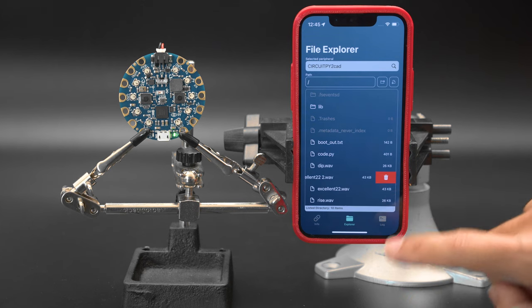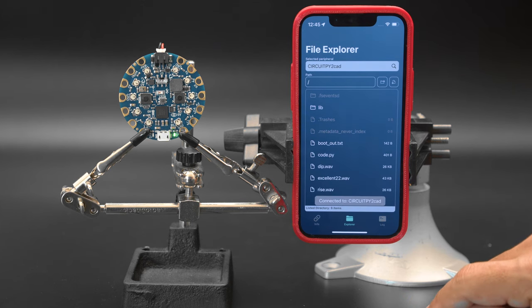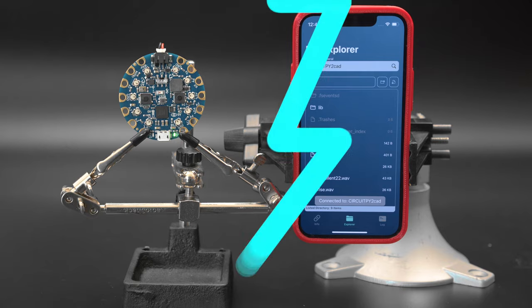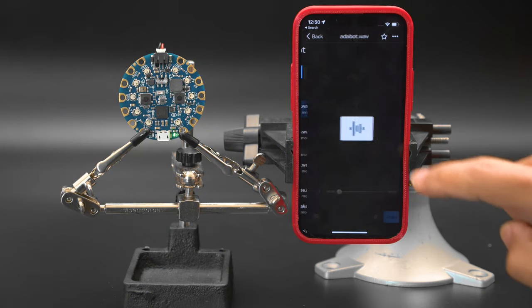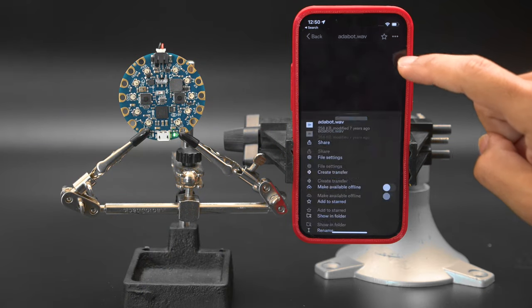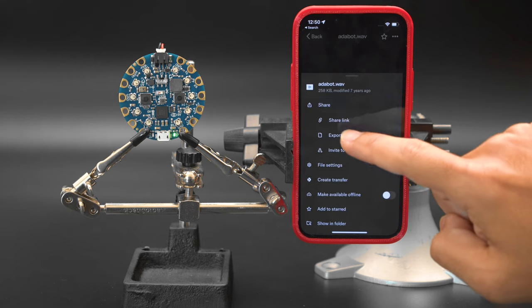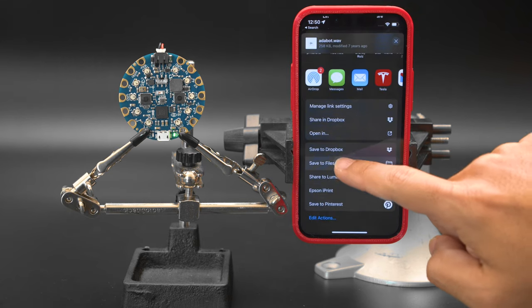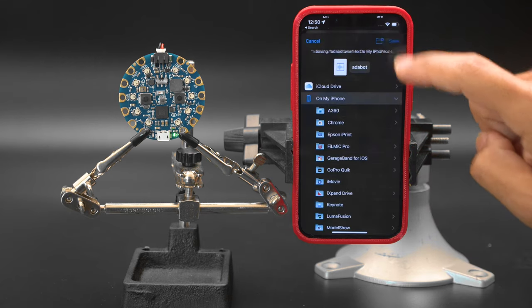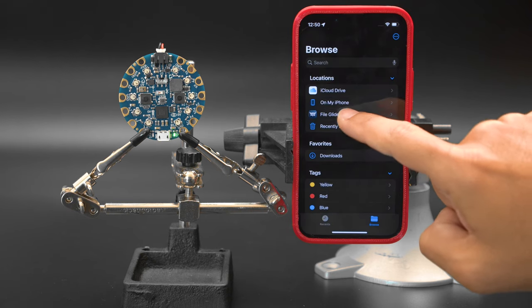In this example, we can easily remove and delete files from the CircuitPython device. Here, we can grab files off Dropbox and upload them from your mobile phone to your CircuitPython board. Once saved to your device, we can use the native files app to copy the audio file and then navigate to the directory on the CircuitPlayground Bluefruit.